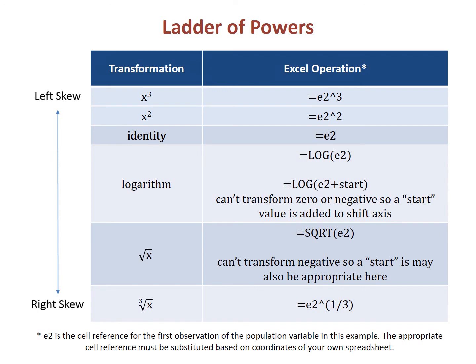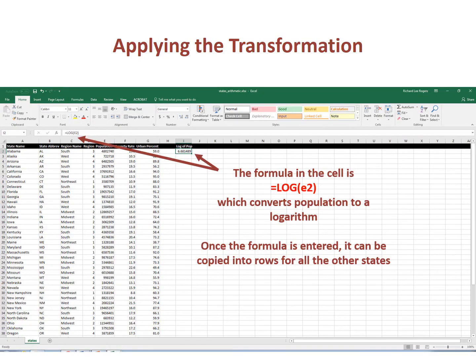To fix skewness, we transform the data using the so-called ladder of powers. There are two columns on the chart: the first being the transformation we might perform, and the second the corresponding Excel expression to be applied to each observation. The value 'identity' is the variable untransformed. We move up the ladder if we have skewness to the left, and move down the ladder if we have skewness to the right. Since population is skewed to the right, we can attempt a logarithmic transformation. Population can be found in cell E2, and the transformed variable is placed in I2. We try one transformation at a time until we find one that works.